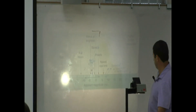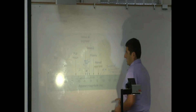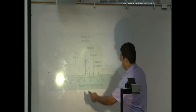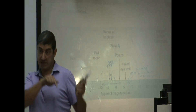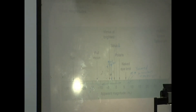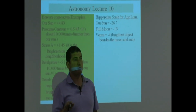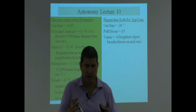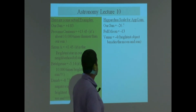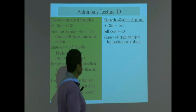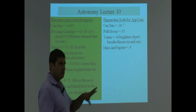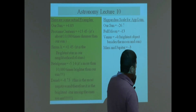Looking at this chart horizontally: Sun is negative 26, full moon negative 13. Venus is the brightest-looking object in the sky besides the full moon — especially when it's close to us — at about negative 4. That's why it's called the morning star or evening star. Mars and Jupiter when they're close to us can also be pretty bright. Mercury is pretty dim; Saturn is dim as well.